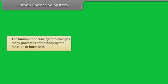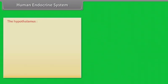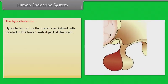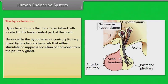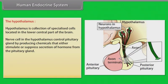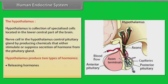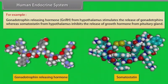The human endocrine system controls many processes of the body through the function of hormones. The hypothalamus is a collection of specialized cells located in the lower central part of the brain. Nerve cells in the hypothalamus control the pituitary gland by producing chemicals that either stimulate or suppress secretion of hormones from the pituitary gland. Hypothalamus produces two types of hormones: releasing hormones and inhibiting hormones. For example, gonadotrophin releasing hormone from the hypothalamus stimulates the release of gonadotrophins, whereas somatostatin from the hypothalamus inhibits the release of growth hormones from the pituitary gland.